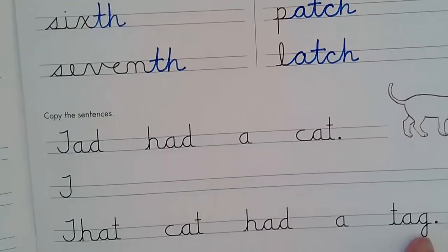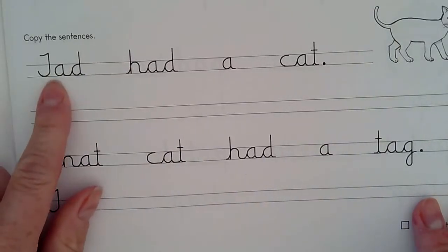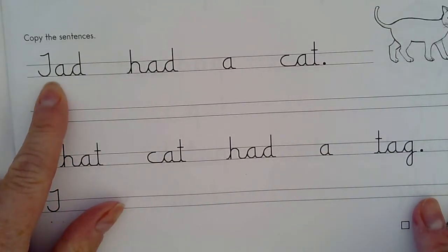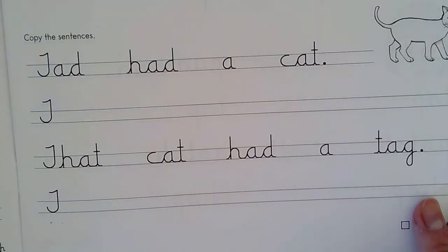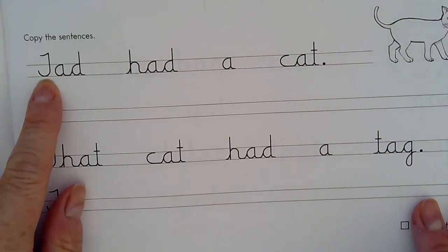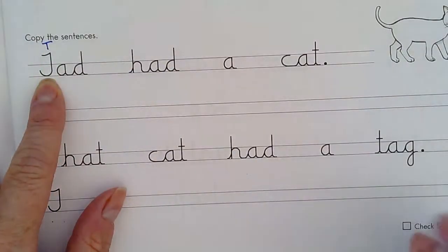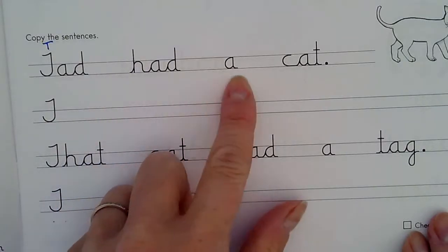And then the bottom part says copy the sentences. So is that our J or is that our capital T? That's a capital T. Look at that funny T, doesn't it look like a J? So this sentence says, remember this is a T here, Tad had a cat.